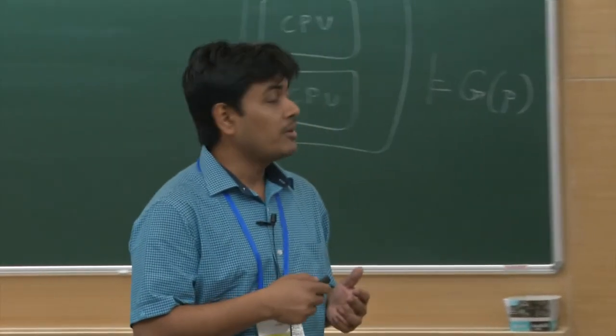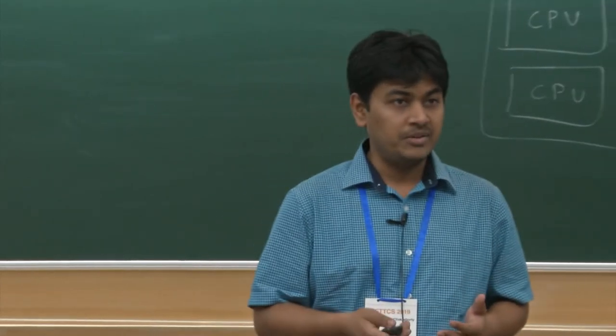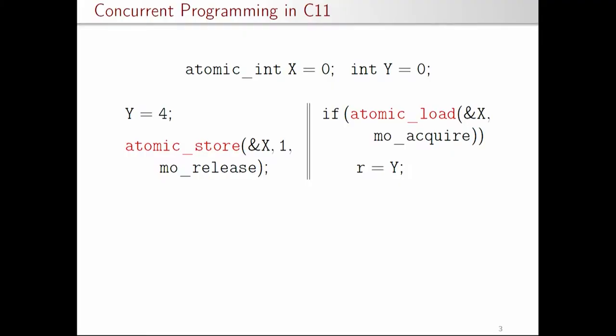C/C++ defines various rules for these atomic accesses. First, having a data race on atomic accesses is allowed and has defined behavior. Second, a memory_order_release operation must ensure — by the compiler or hardware — that all accesses before the release store are completed when that store takes place. On the other side, when atomic_load with memory_order_acquire is executing, it ensures that the load finishes before any subsequent access after the acquire.